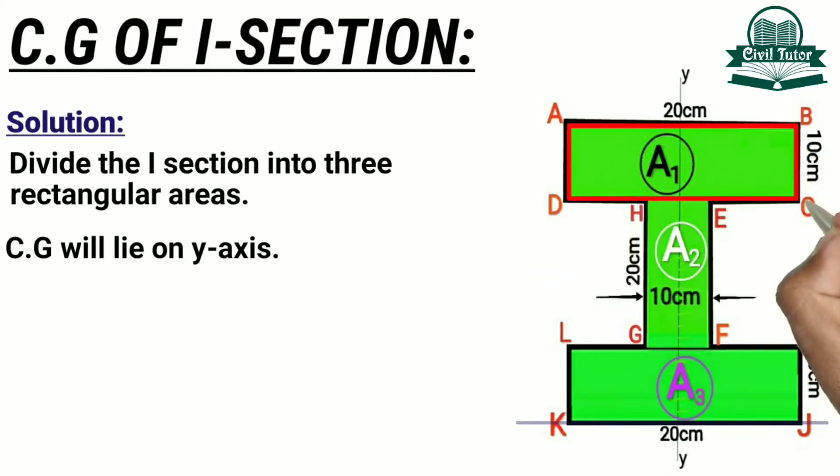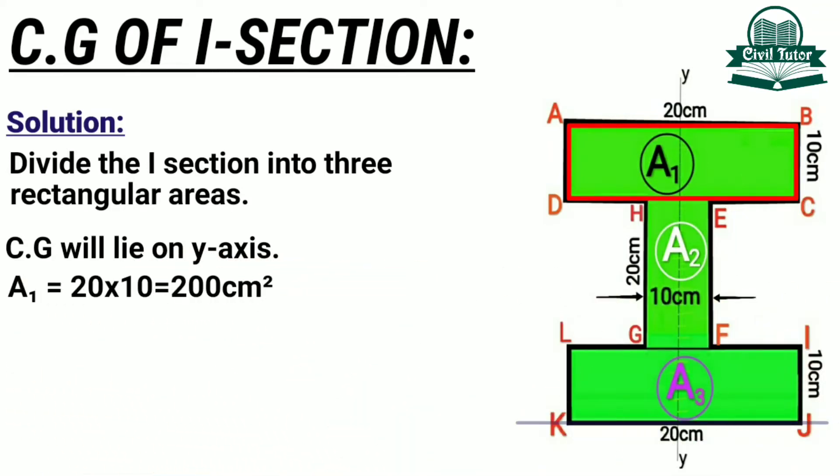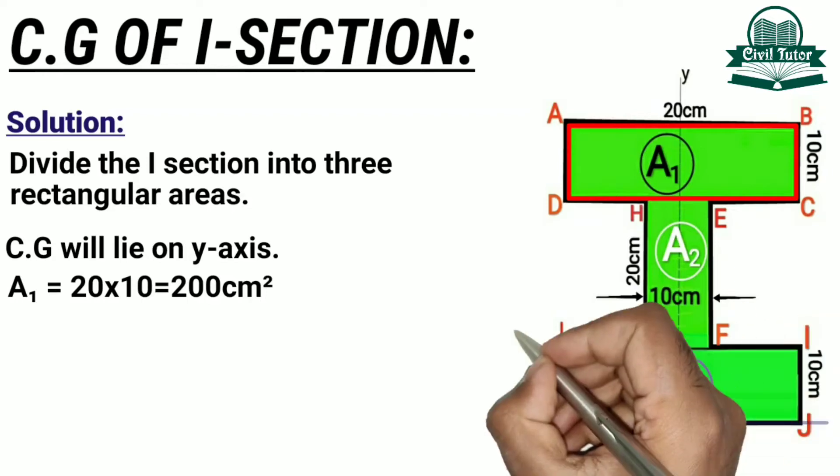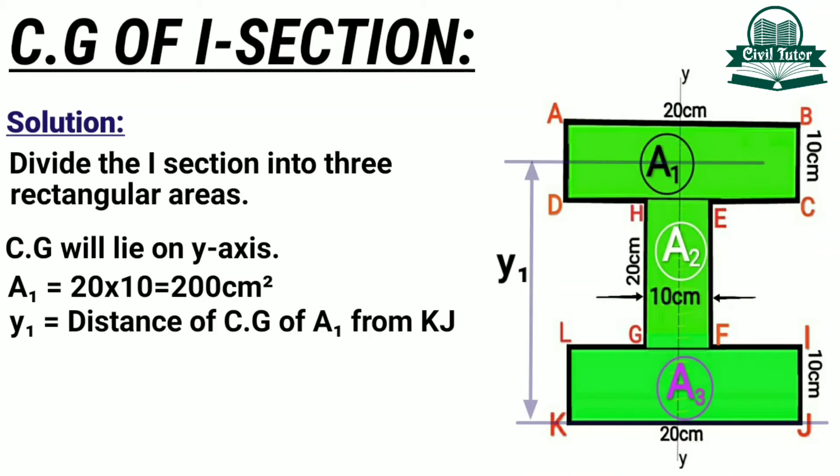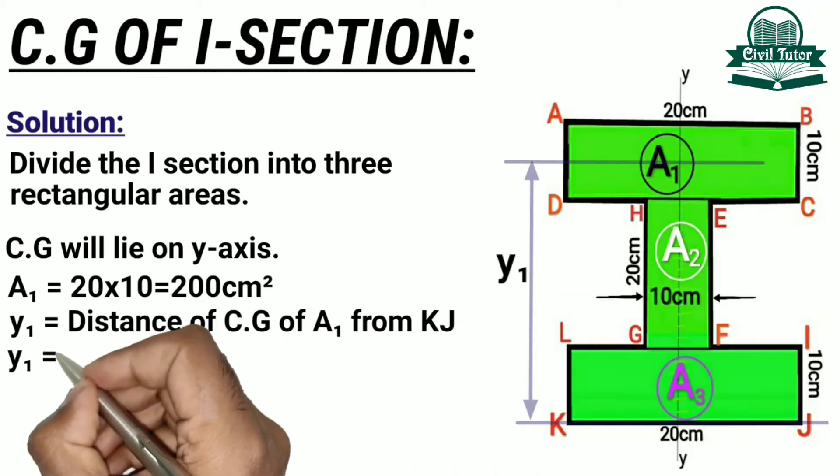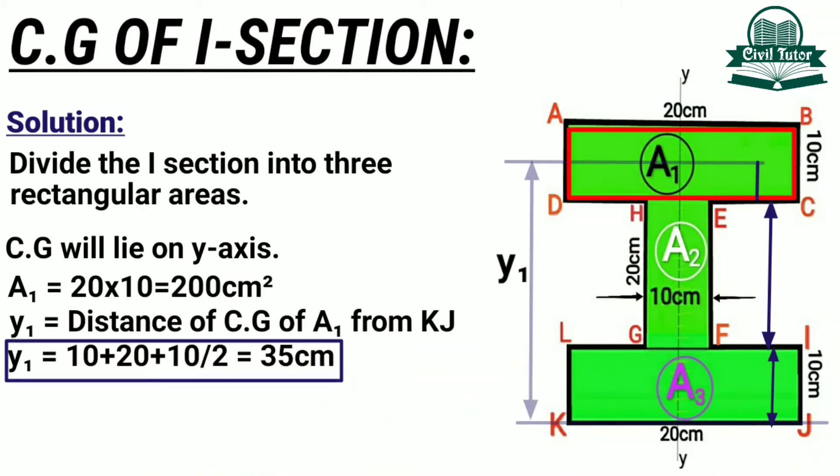Let A1 be the area of rectangle ABCD which is 20 x 10 cm equal to 200 cm square. Y1 is the distance of center of gravity of area 1 from reference line KJ which will be equal to 10 cm plus 20 cm plus the centroid of this rectangle which is 10 divided by 2, and we will get 35 cm in total.